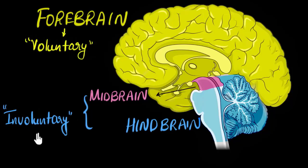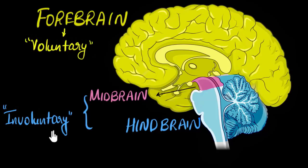When I say involuntary functions, I mean functions happening in your body that you're not in control of — for example, your heart beating or your digestion. You're not in control of those, right? Those are mostly taken care of by your midbrain and hindbrain.